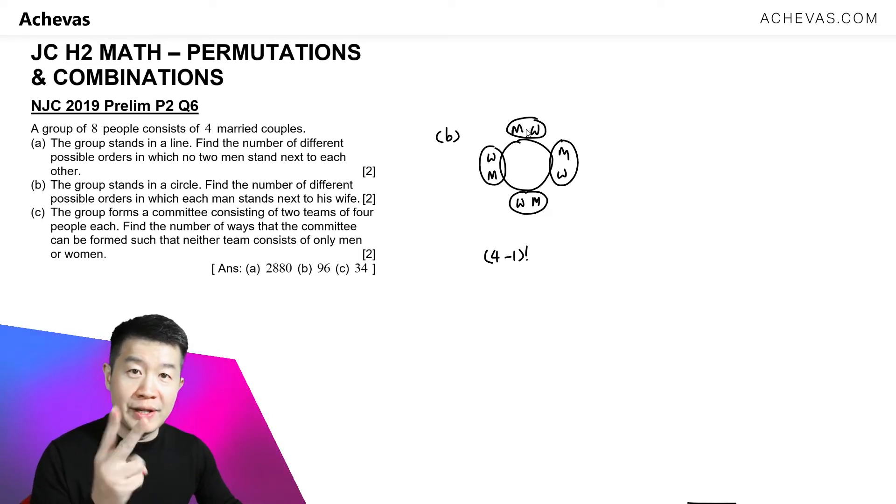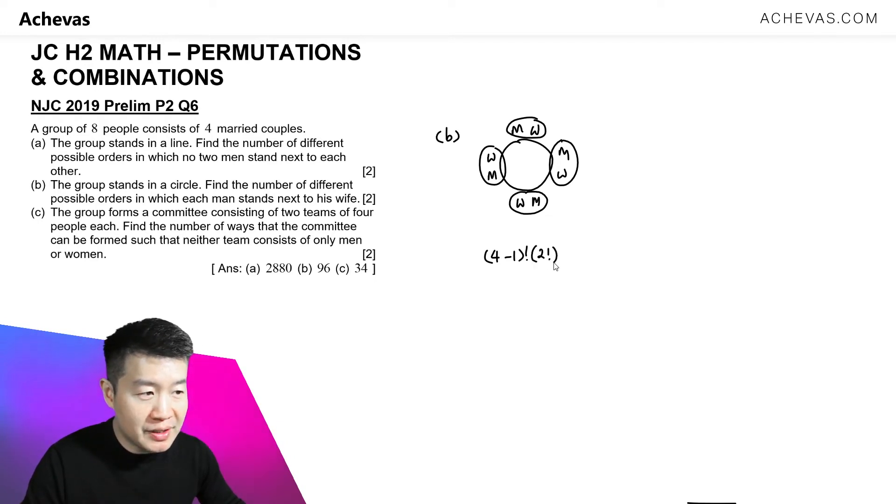And within this group, the men and women, they can swap positions. So it is going to be a two factorial. Here is also another two factorial multiplied by another two factorial and another two factorial. So we will either multiply this four times or it is basically just this to the power of four. And this will give us 96.